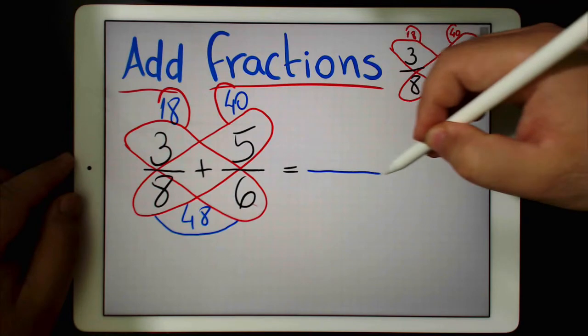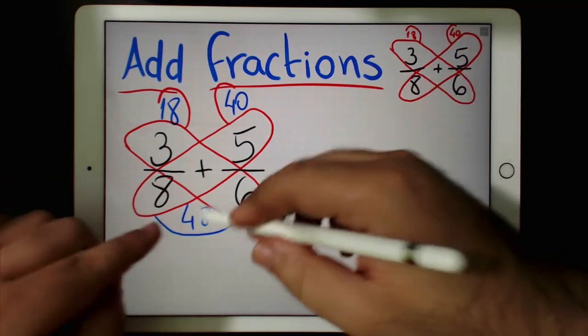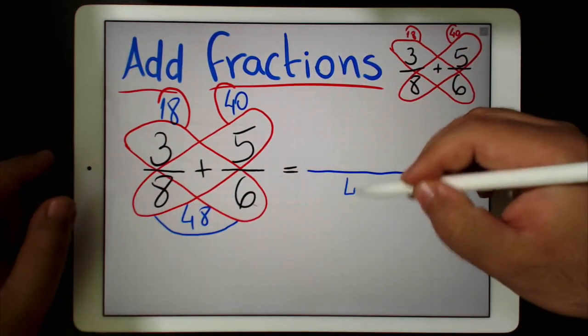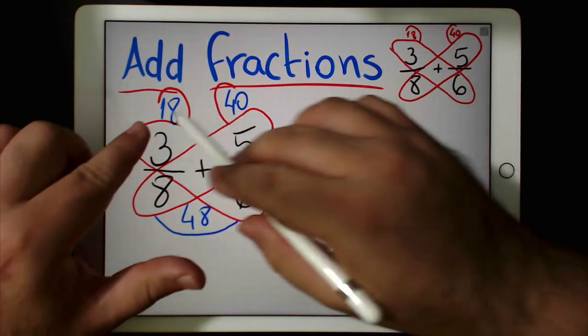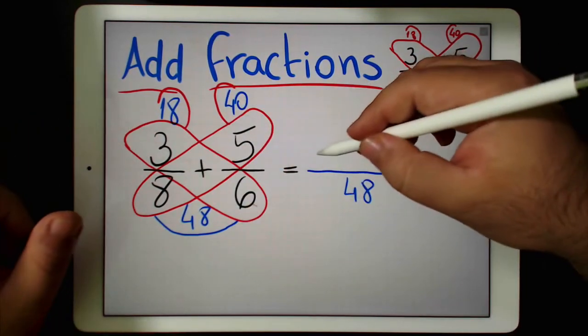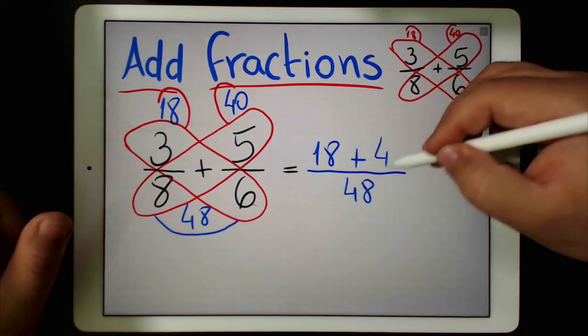So now we have another fraction with 48 as a denominator. 48 right over here. And here above, we have these other numbers. So 18 plus 40.